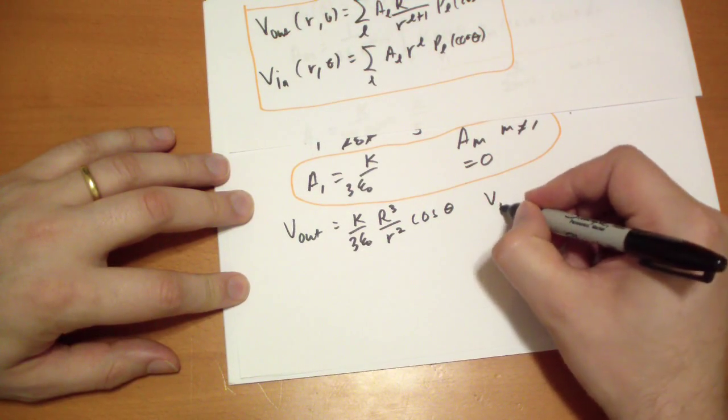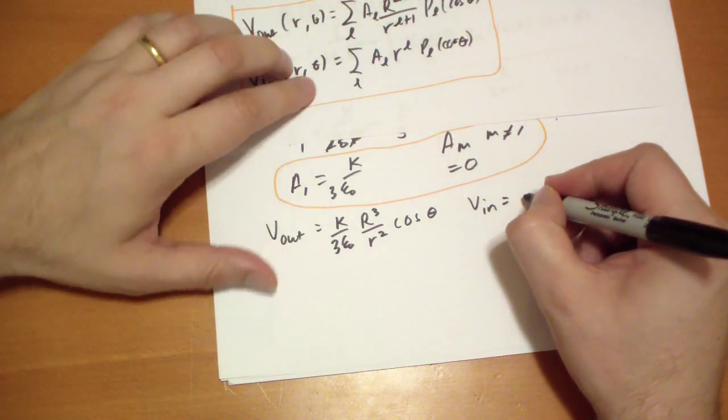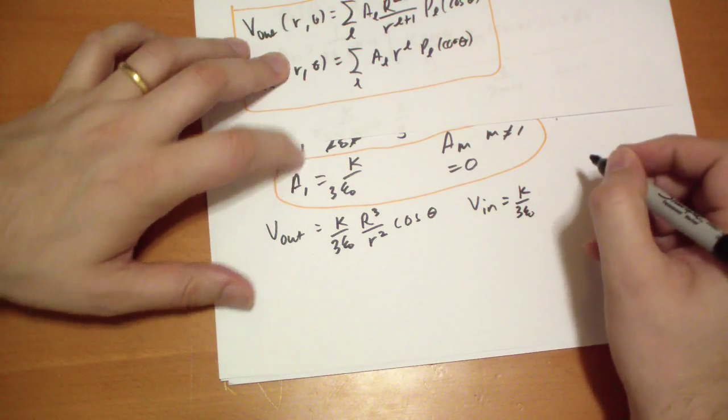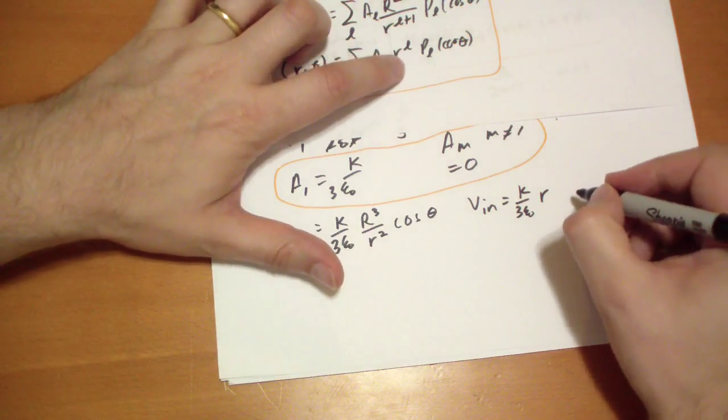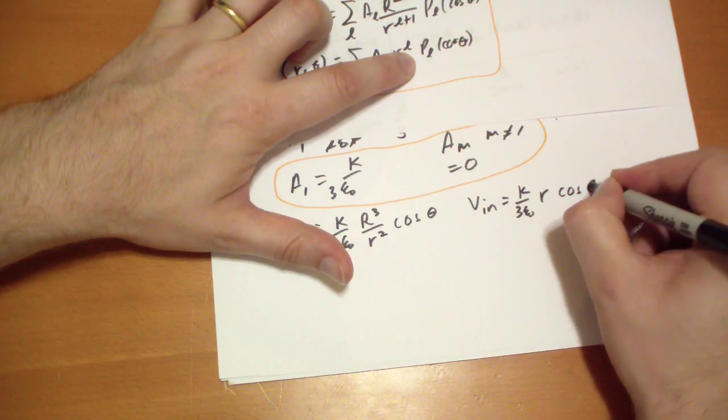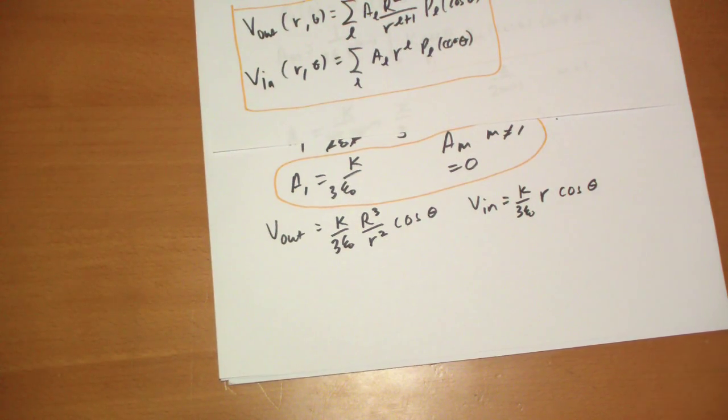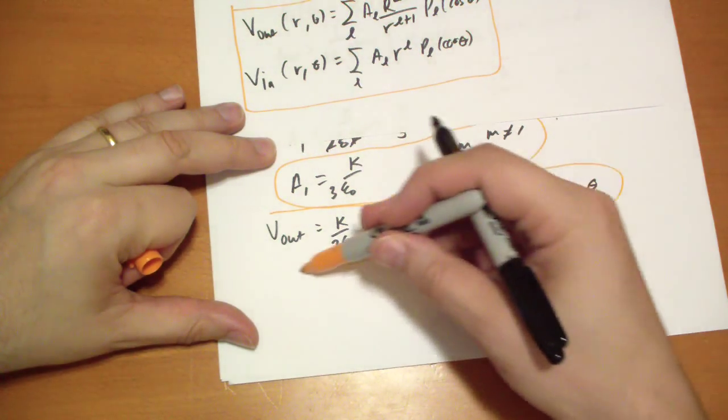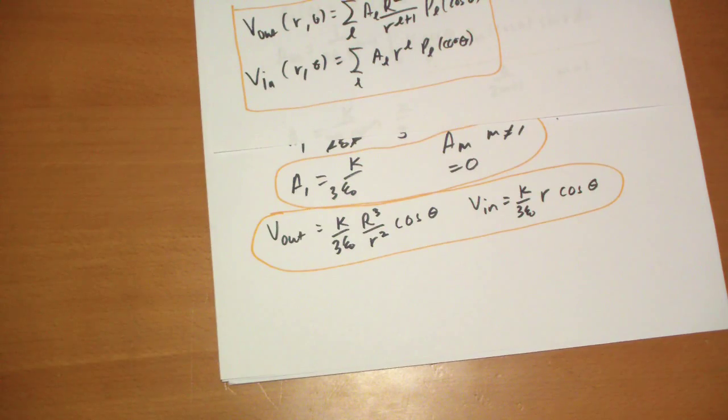And our internal potential is equal to a_1, which is k over 3 epsilon-naught, r cos-theta. So that's the potential that it looks like when we're given the surface charge that depends only on the vertical axis. It's proportional to how high up and down you are on that sphere.